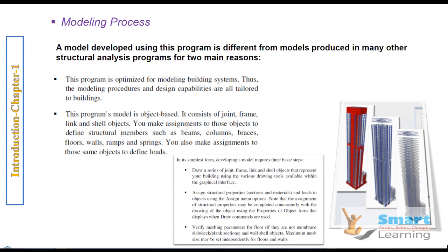Broadly, while developing a model you use three different steps, starting from the configuration of your objects like columns and beams with joints, then you assign the specific section property and material, then you go for meshing. When you talk about meshing, it applies to slabs, shear walls, decks, or different area objects where the area-specific ratio is automatically taken care of, and you can refine it further if needed.